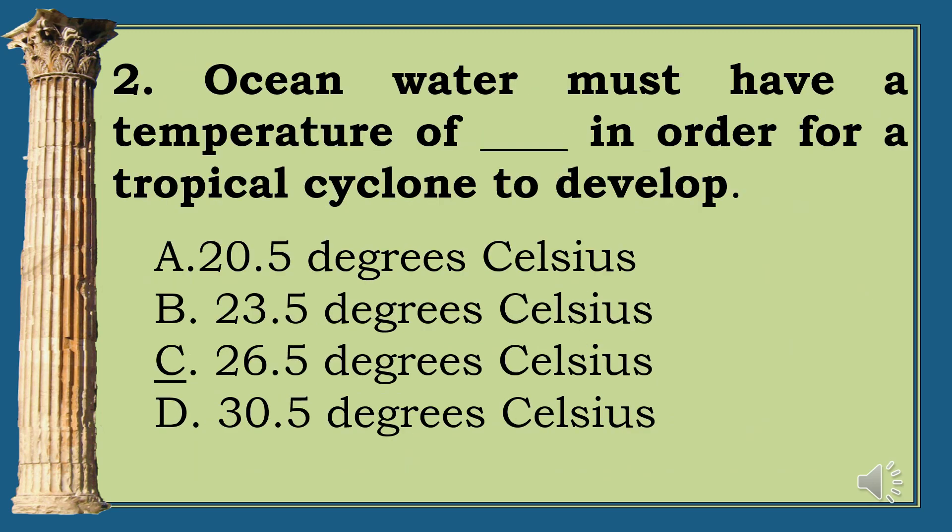The correct answer is D. Question 2: Ocean water must have a temperature of ___ in order for a tropical cyclone to develop. A. 20.5 degrees Celsius. B. 23.5 degrees Celsius. C. 26.5 degrees Celsius. D. 30.5 degrees Celsius. The correct answer is letter C.